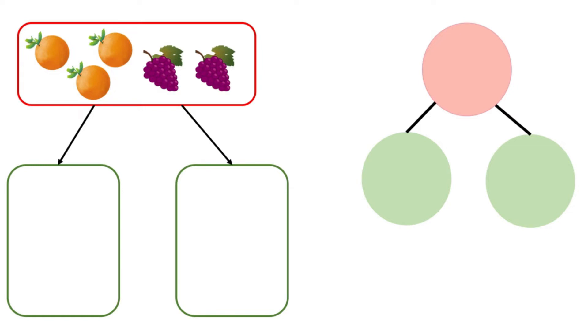How many fruits are there? There are one, two, three, four, five fruits altogether. This is our whole.